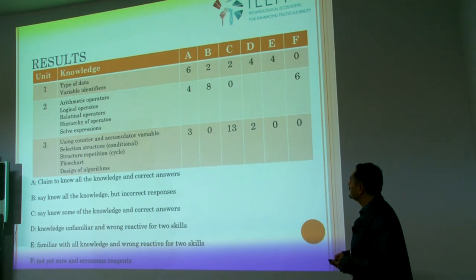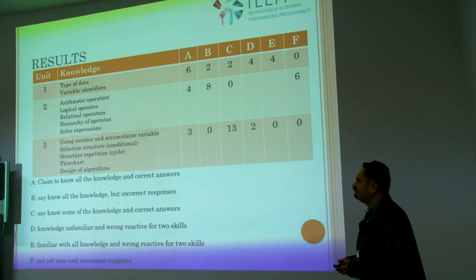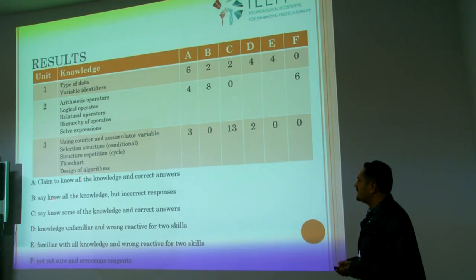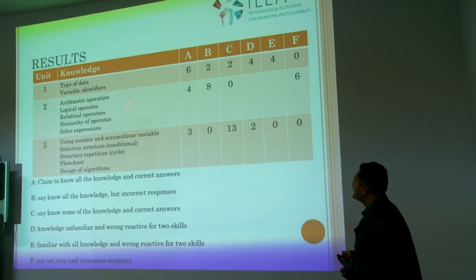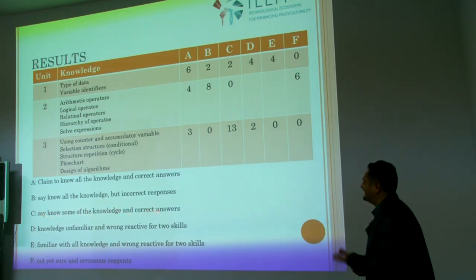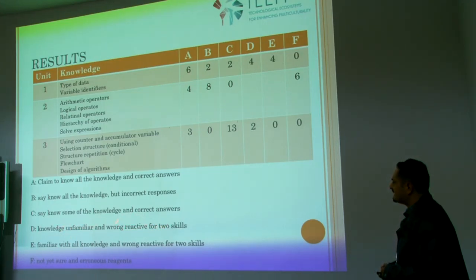They had six states. For example, the student claimed to know all the knowledge and got the correct answer — those are consistent results. But I had two contradictory results: a student saying they know all the knowledge but getting incorrect responses. When the thematic unit presents a difference in the level of knowledge — for example, in the KC, some knowledge and not — and I got correct answers, that is a correct correlation because the student represents real knowledge.